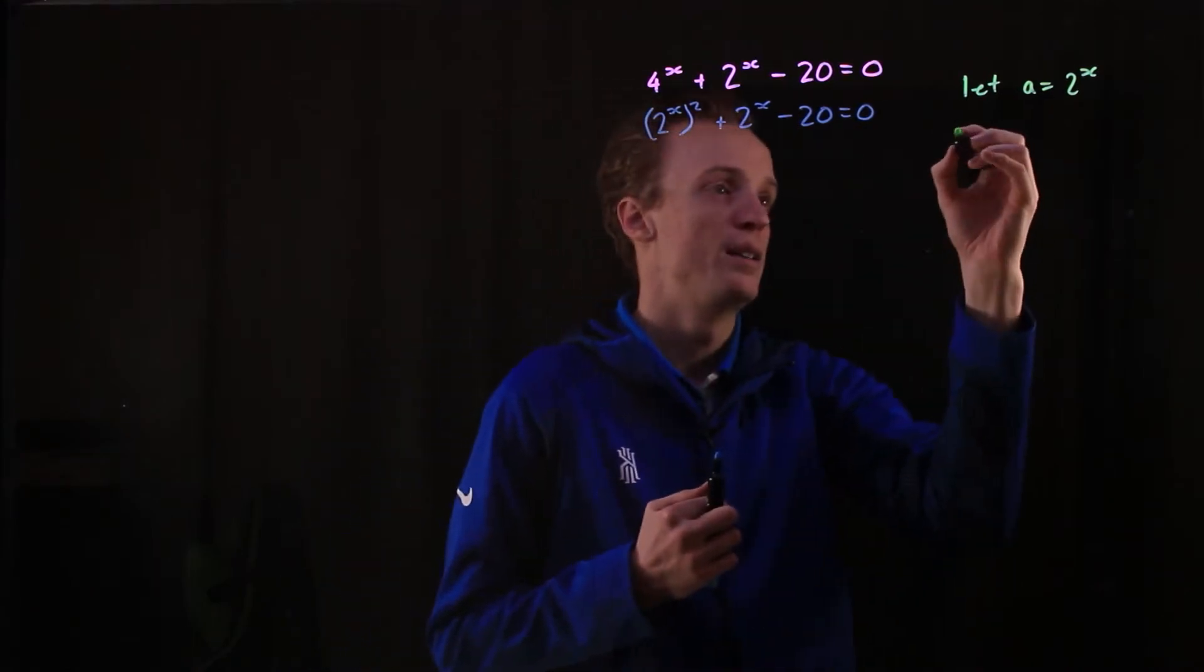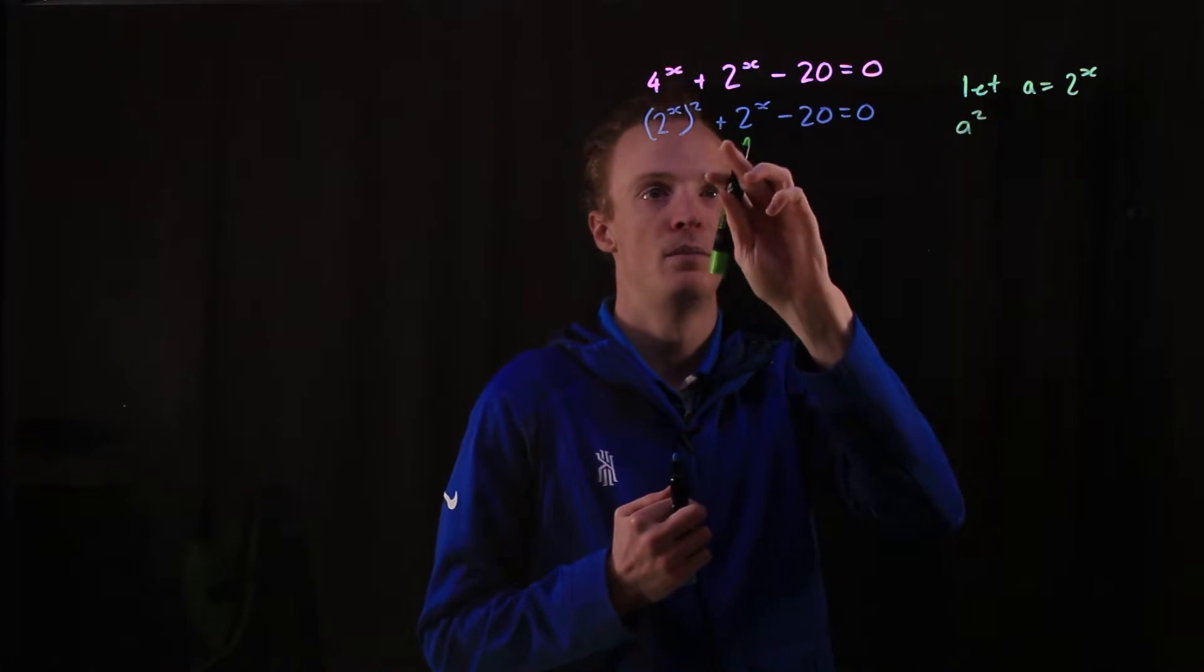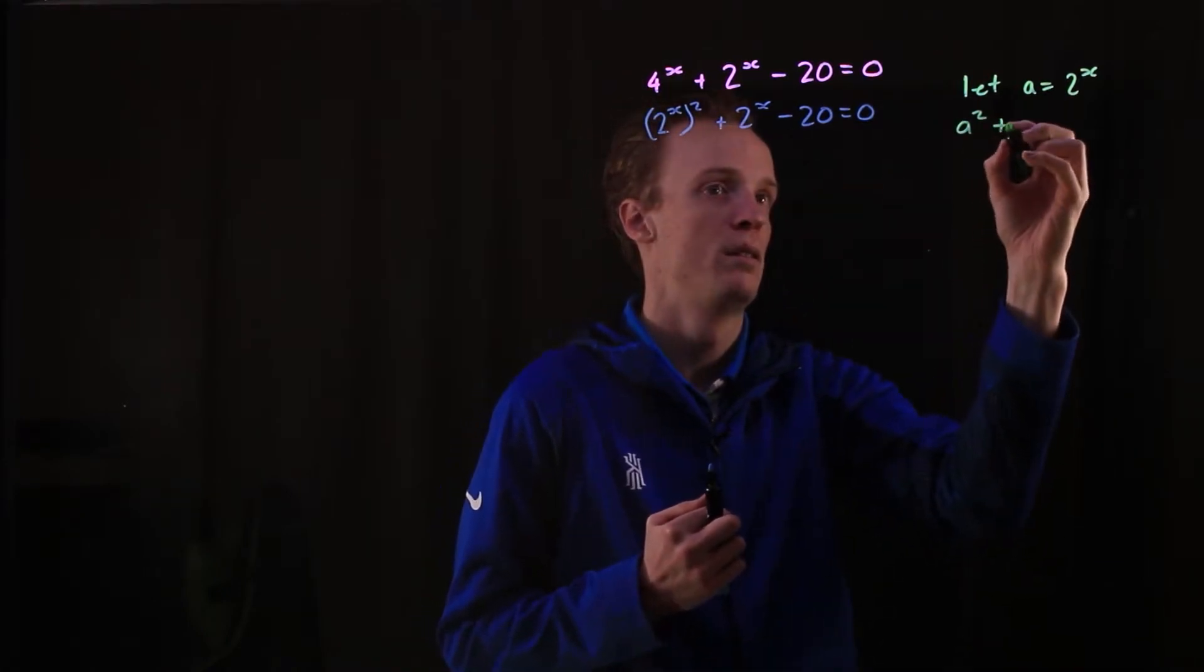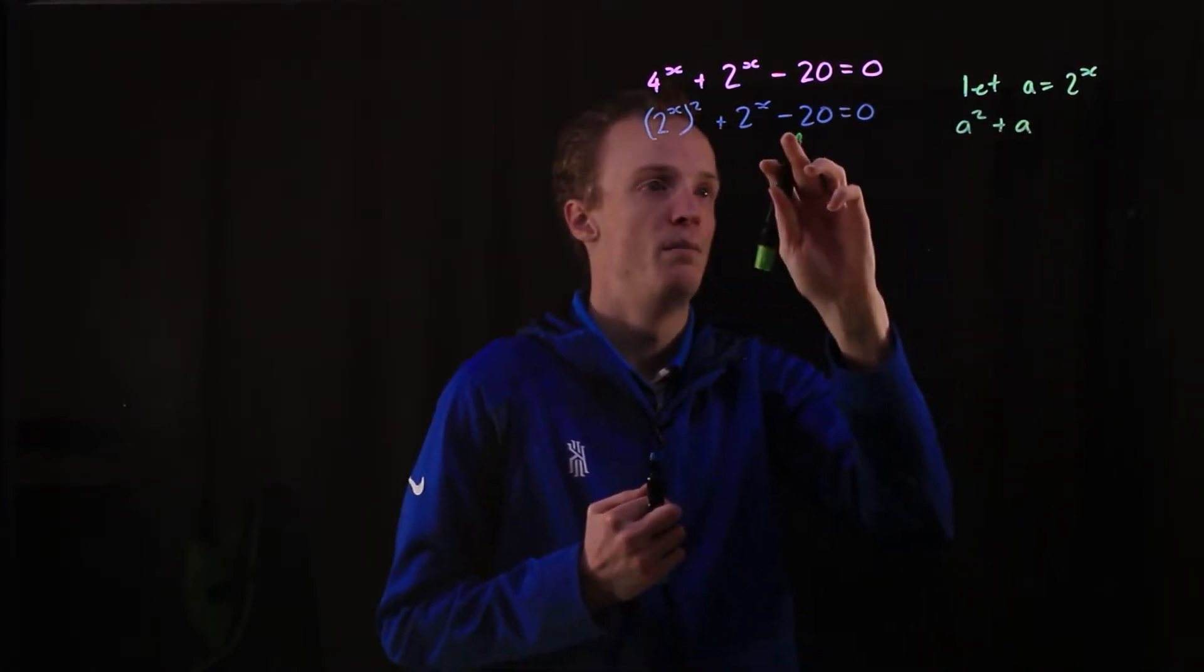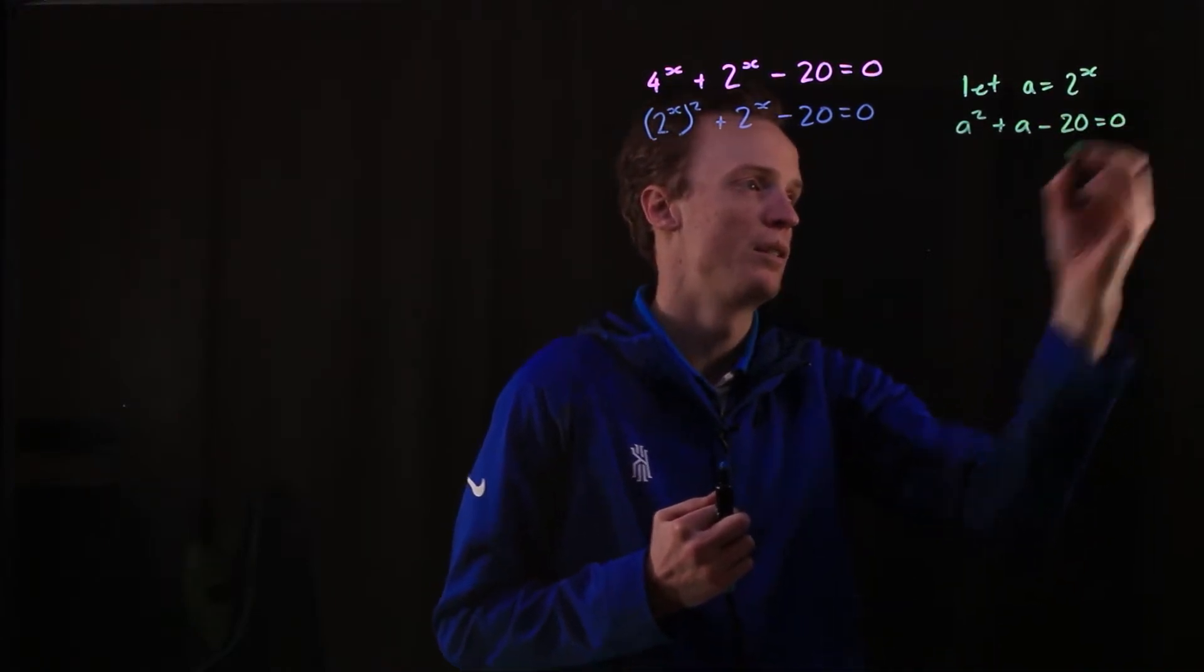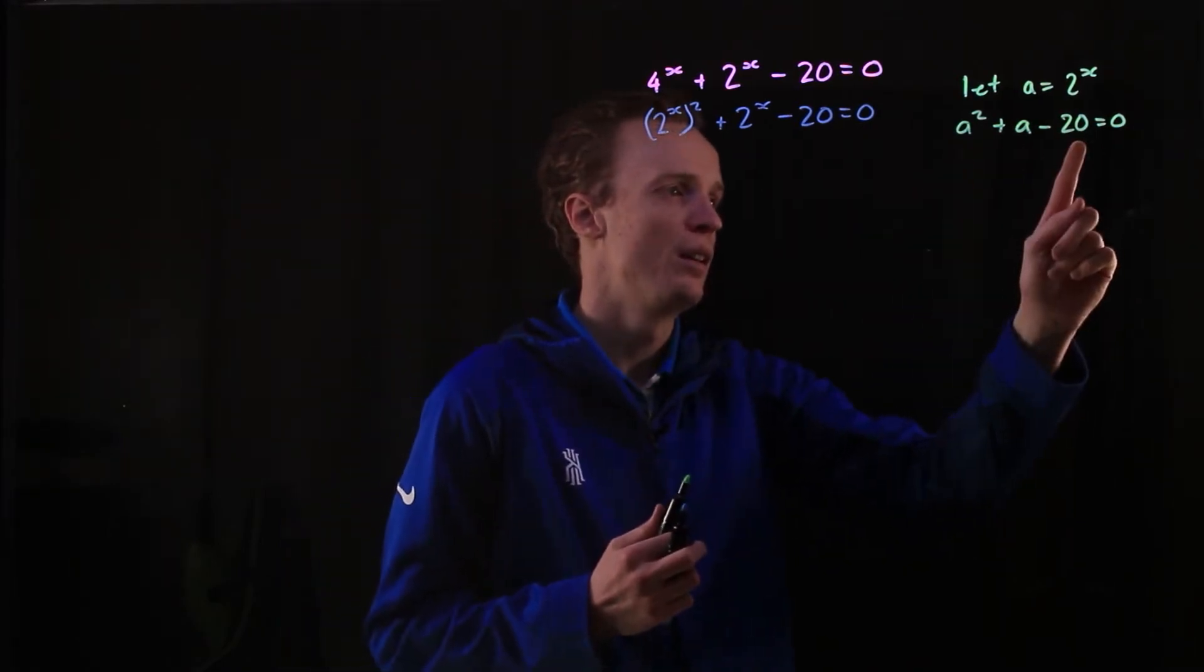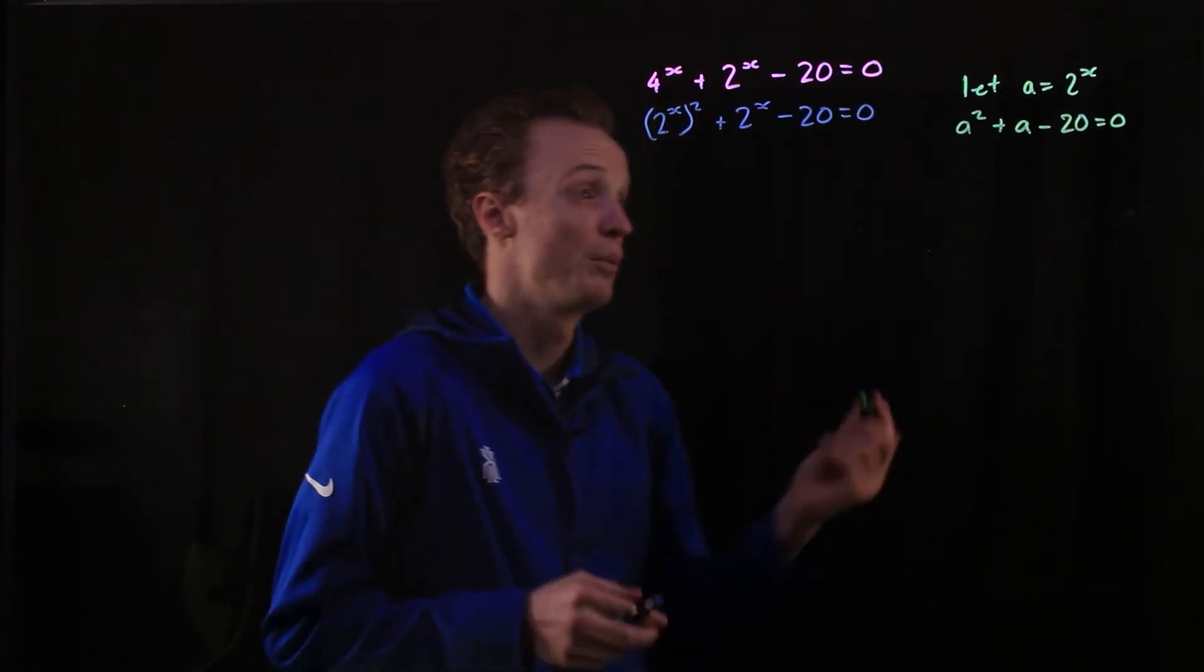This can be rewritten as, well, this will be a^2 + a - 20 is equal to 0. Well, if I was wanting to factorise this here, I can factorise this using sum and product.